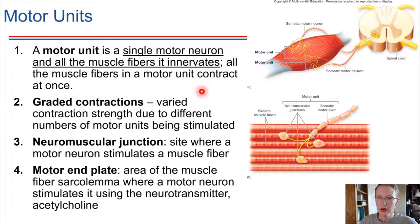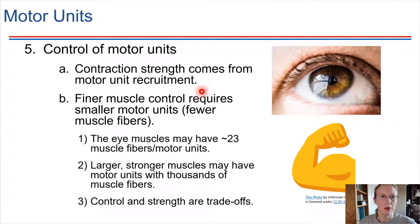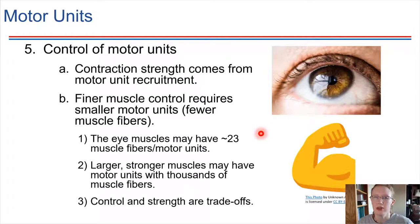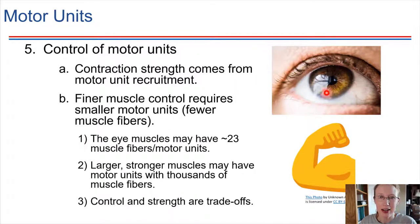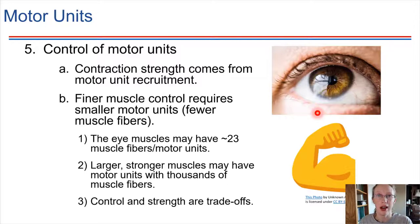With motor units, let's look at a couple of examples in terms of the levels of control that are possible. For fine motor abilities — fine muscle movements like with the eye — you can look at something directly ahead, or at something just two millimeters out to the side. That's a very fine control of the muscles in your eye.